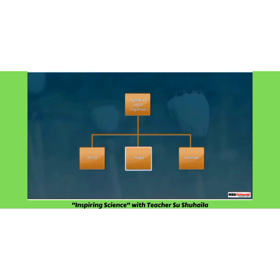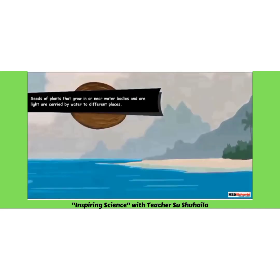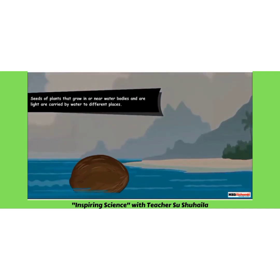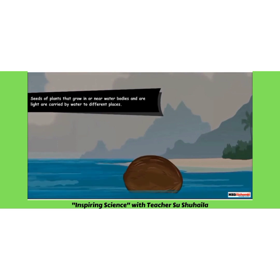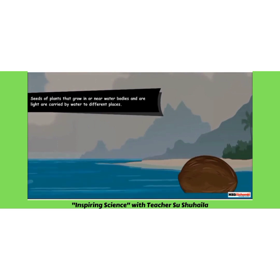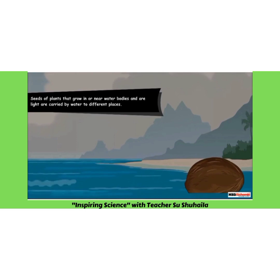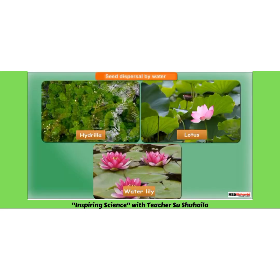Now let's see how water helps in seed dispersal. Seeds of plants that grow in or near water bodies, like coconut, float on water and are carried by water to different places. Other examples of seeds dispersed by water include hydrilla, lotus and water lily.